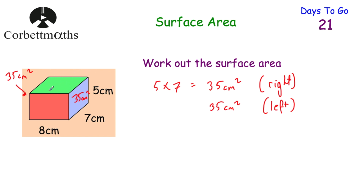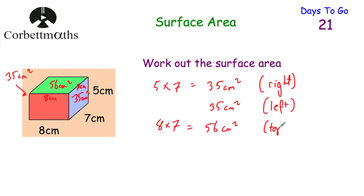In terms of the rectangle on the top, this length here is 8 centimetres and the length of this bit here is equal to 7 centimetres — 7 centimetres because it's the same as this one. So 8 times 7 will give us the area of the rectangle on the top: 8 multiplied by 7 equals 56 centimetres squared. That's the area of the top of this cuboid, and that's going to be the same as the area of the rectangle on the bottom — also 56 centimetres squared.